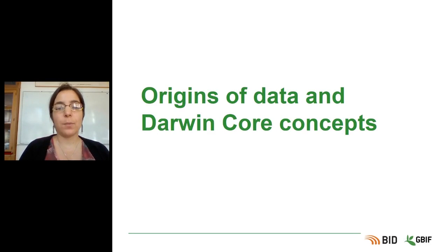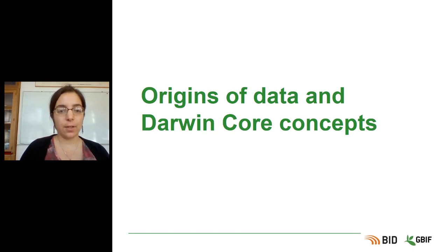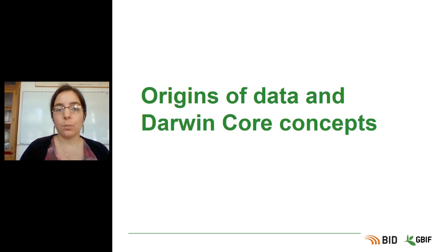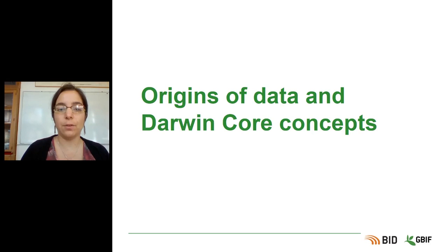We are going to talk about the origins of data and how they are related to Darwin Core concepts. Darwin Core is a data standard used in the GBIF network, which will be presented in more detail in further modules. For now, we are going to link the origins of data and how they can be published through GBIF using Darwin Core concepts.